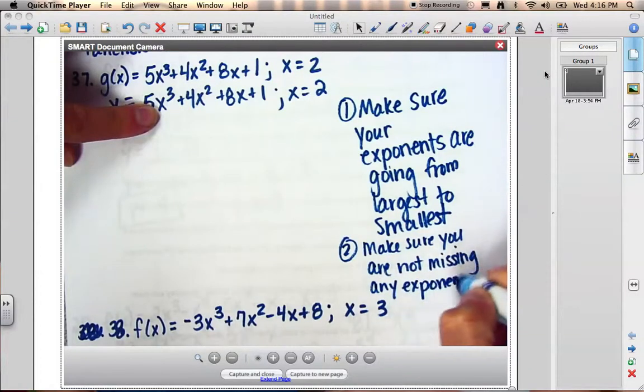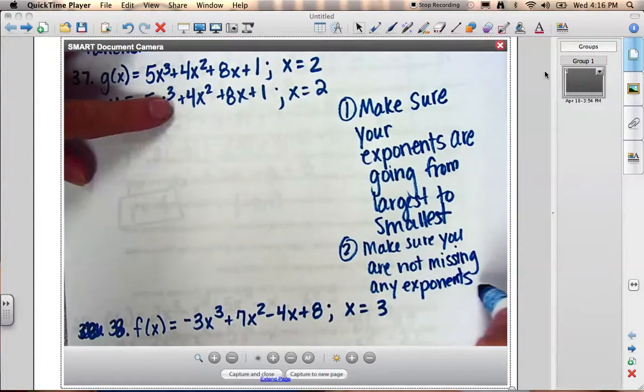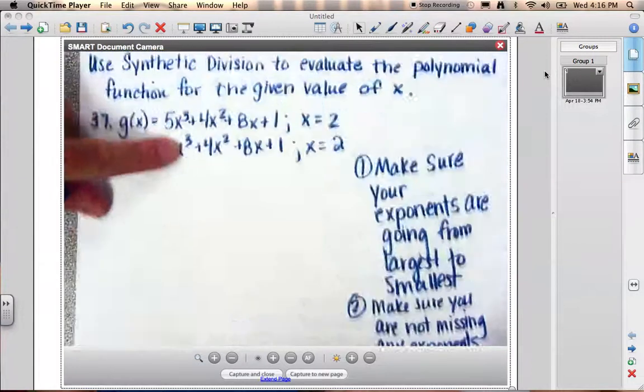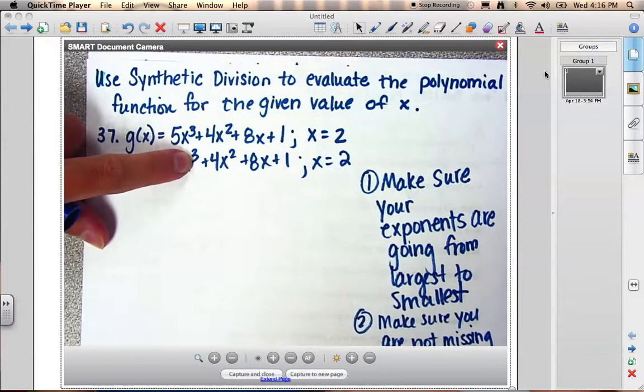However, the second thing you have to make sure is make sure you are not missing any exponent. So, for example, if I start at, let's just say the degree is 8th, then when I use synthetic division, I have to take care of the 8th exponent, the 7th exponent, the 6th exponent, 5th, 4th, 3rd, 2nd, 1st, and then my constant. If it's not there, I must plug in a 0 for it.